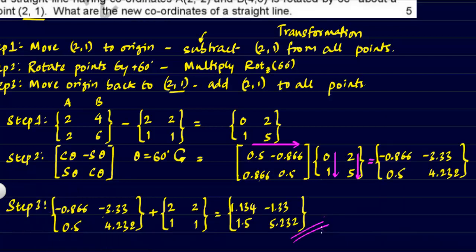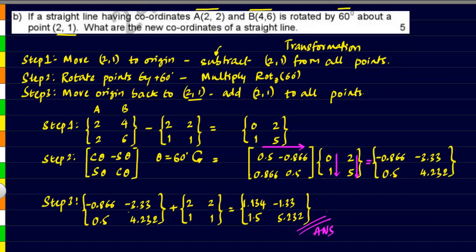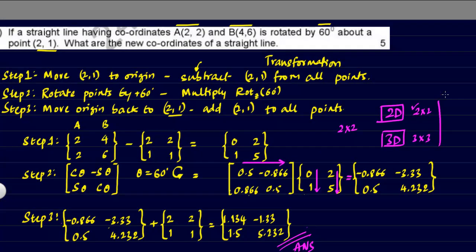So these are our final answers. This problem is on two-dimensional transformation, so we used 2×2 matrices throughout. If the problem is extended to three dimensions, we get 3×3 matrices. If the homogeneous method is specifically mentioned, it adds one extra row and column — making it 3×3 in 2D and 4×4 in 3D.